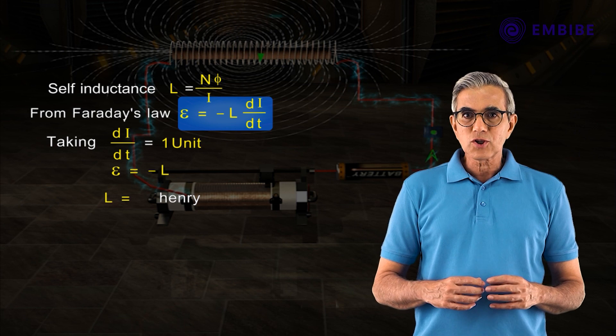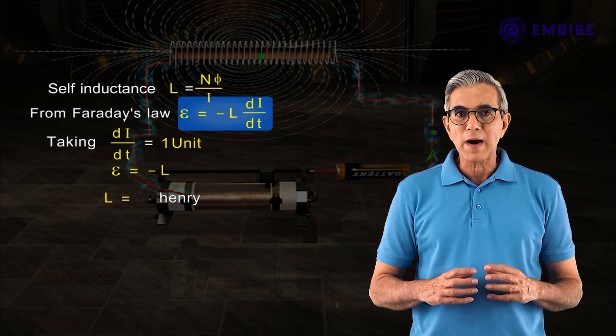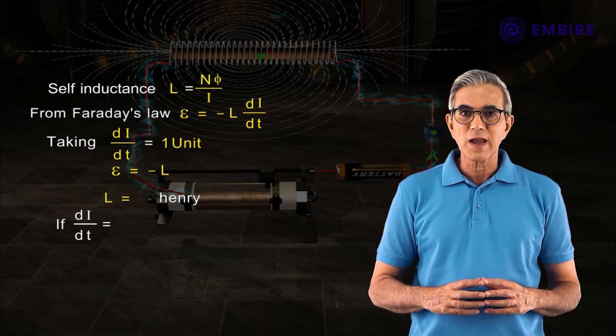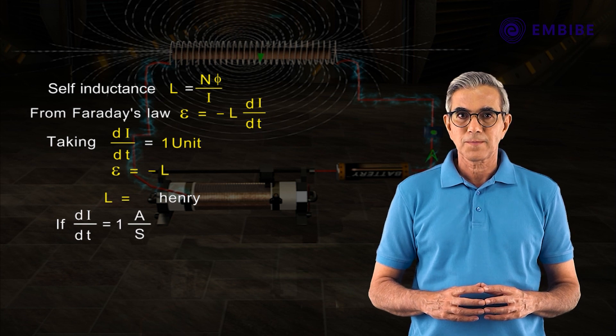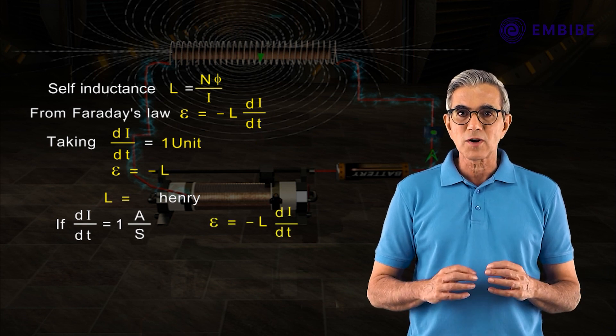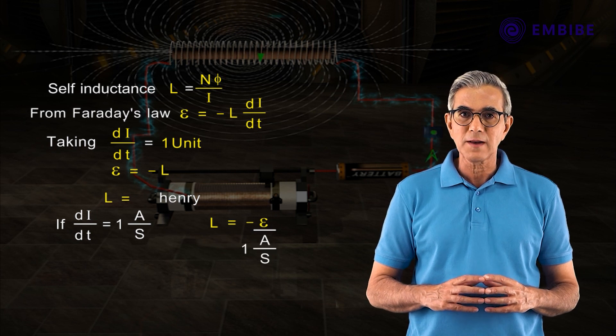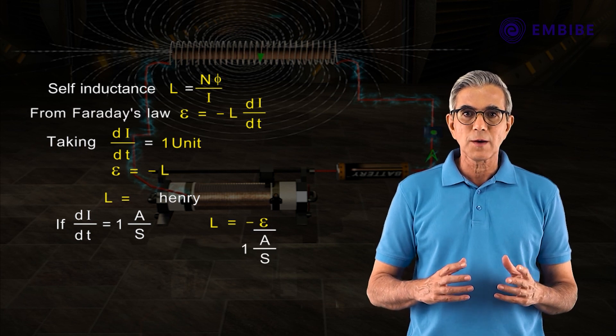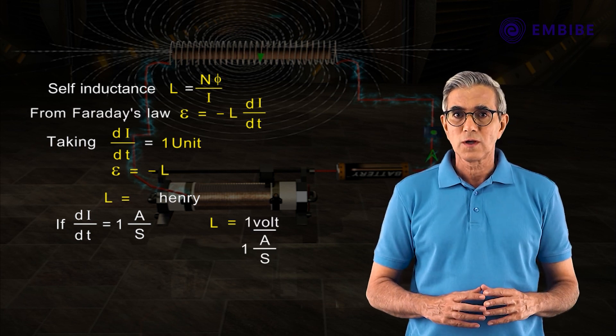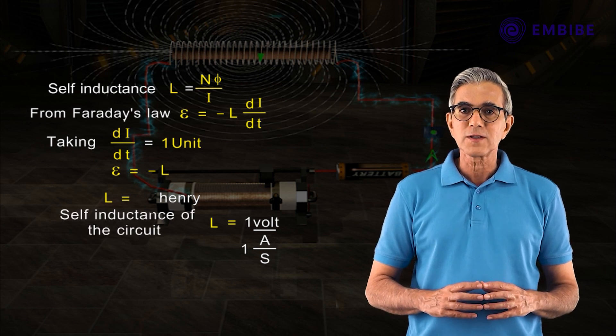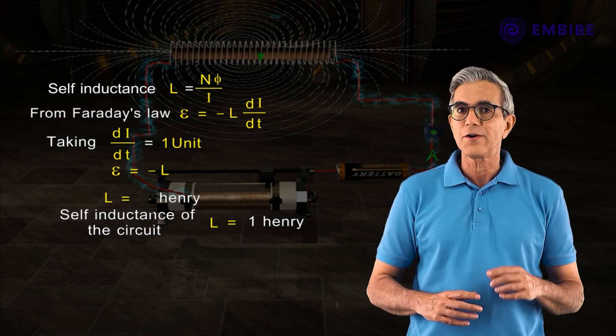In the equation E = -L·dI/dt, if dI/dt = 1 ampere per second and the induced EMF is 1 volt, then the self-inductance of the circuit is 1 Henry.